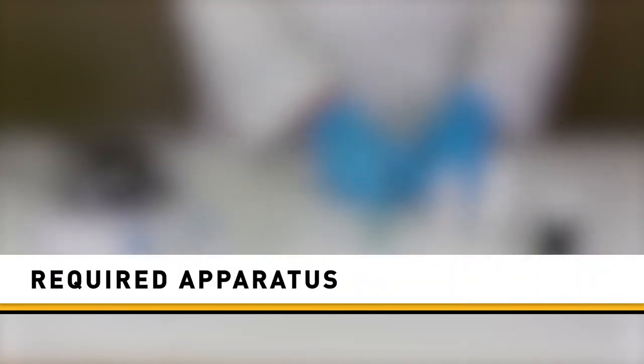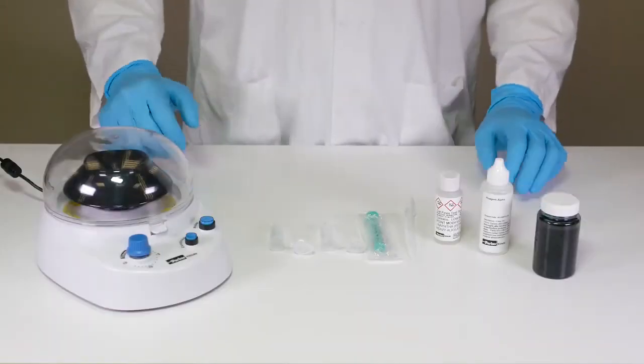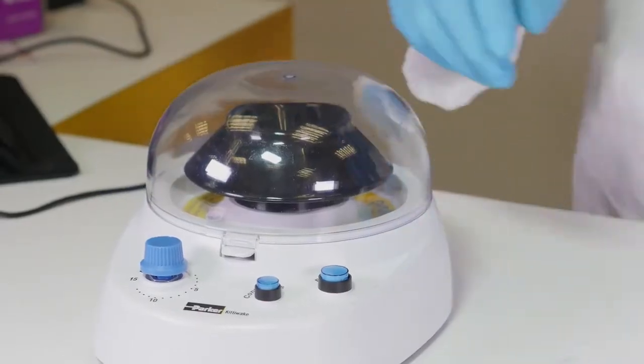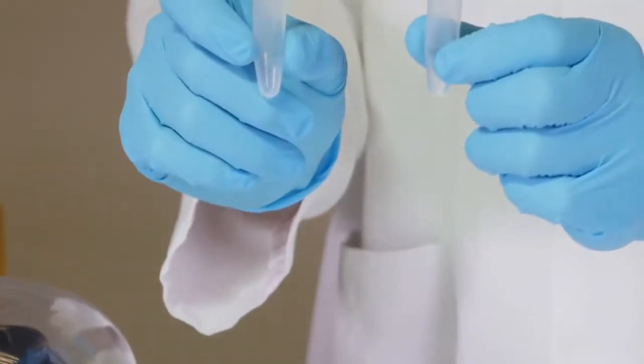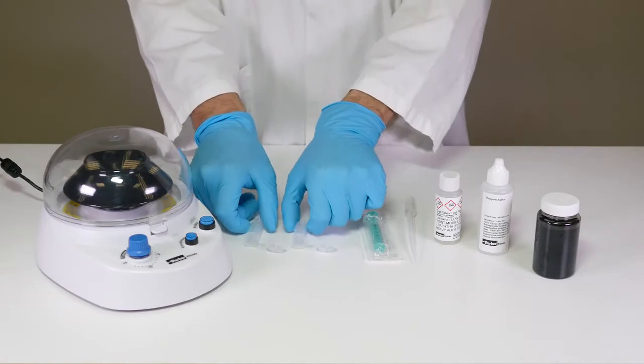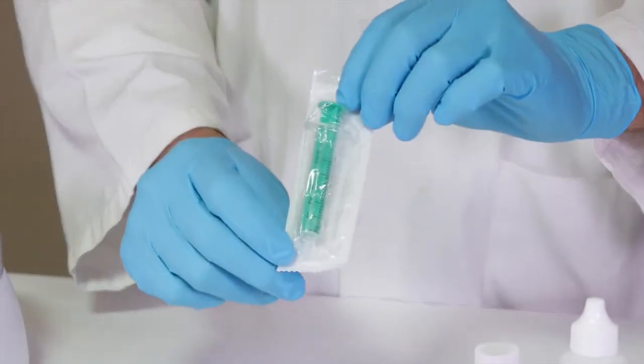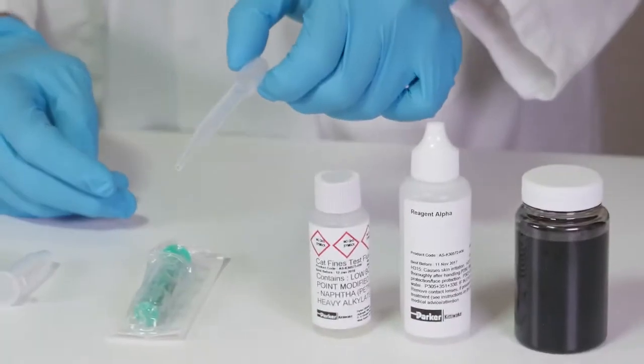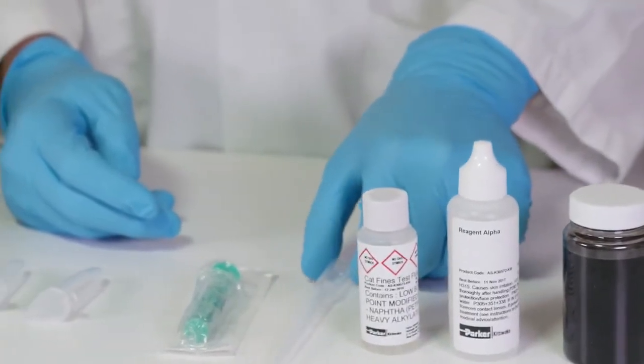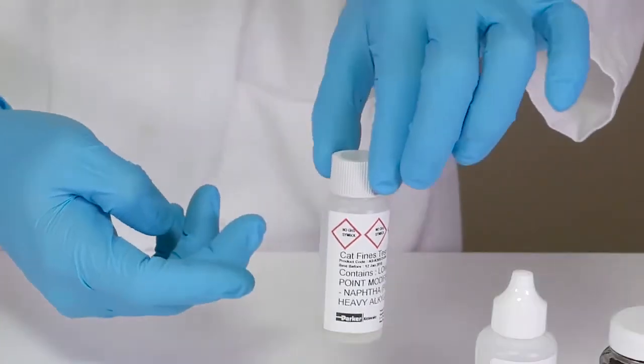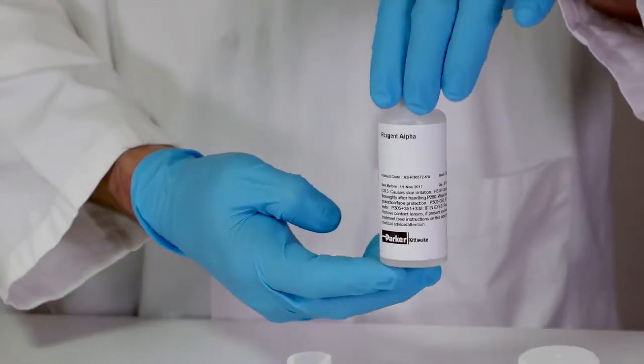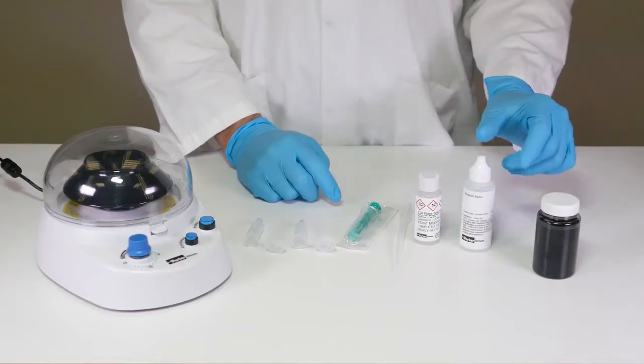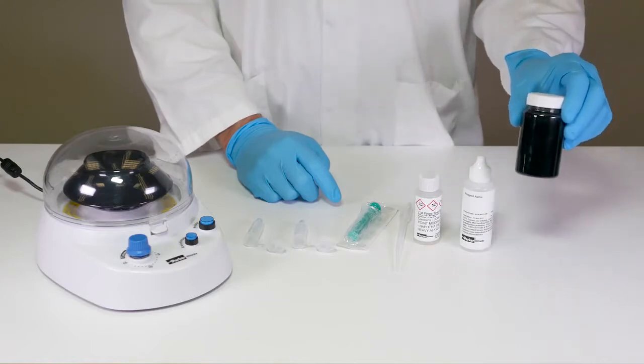In order to run a cat fines test, you will require the following: a Parker Kittywake centrifuge, five milliliter sample test tubes, five milliliter sample syringes, an extraction pipette, a pre-prepared bottle of test fluid, a bottle of reagent alpha, and your heavy fuel oil sample.